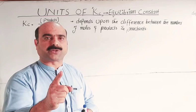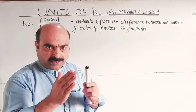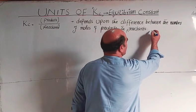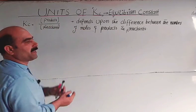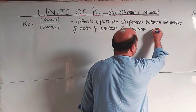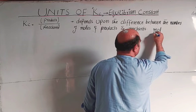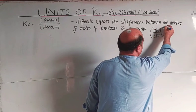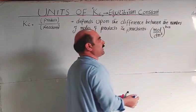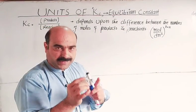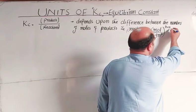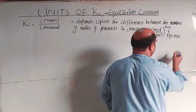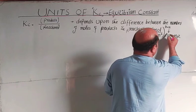Now here is a short trick. To find the unit of Kc, the concentration unit is mole per decimeter cube, raised to the power delta n. Delta n is the number of moles of products minus number of moles of reactants. Apply this formula to calculate the unit of Kc.